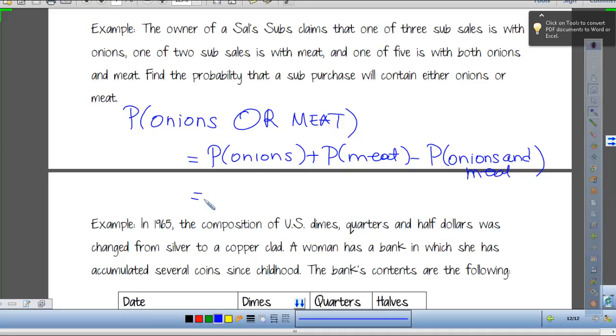And so probability of onions, he just told us, was one-third, probability of meat is one-half, I think that's a little low. And then the probability of onions and meat, one-fifth. We're gonna subtract that.